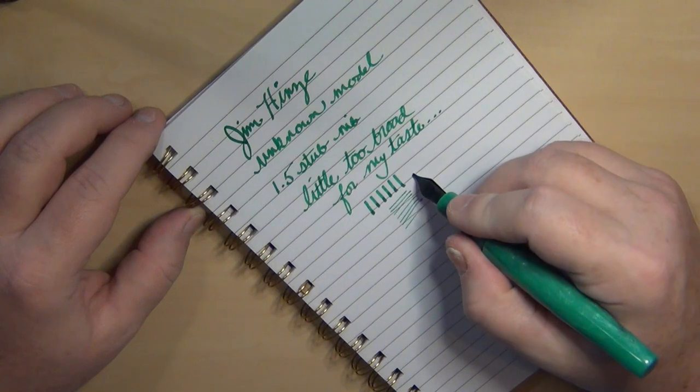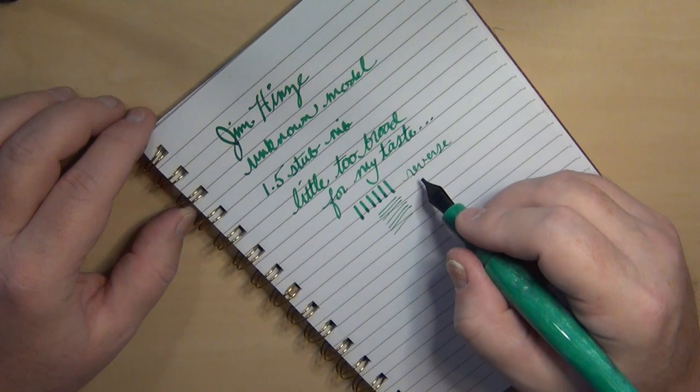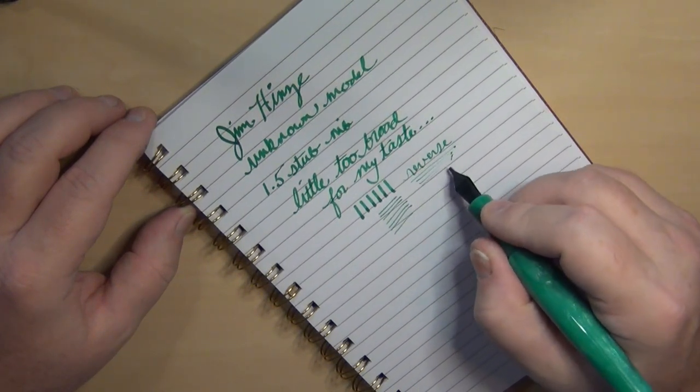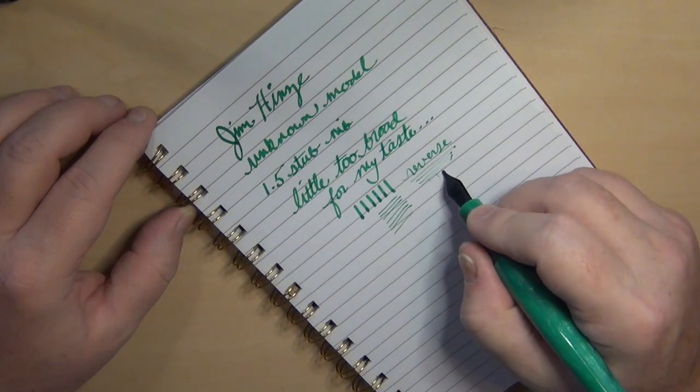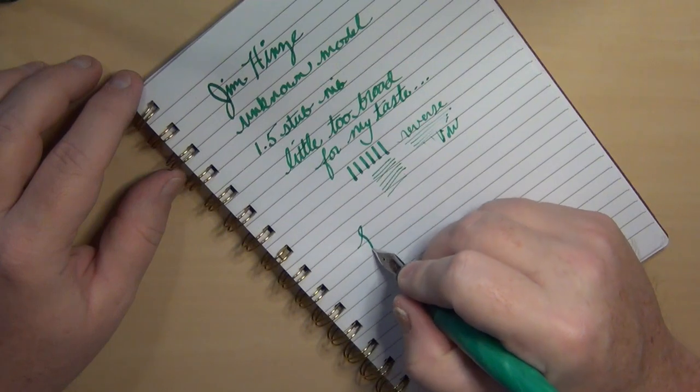It's still smooth on the reverse because it is a stub nib, and it does get a little thinner if you want to write with it that way. But you can't really do much beyond that.